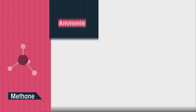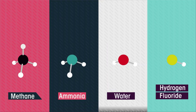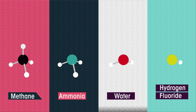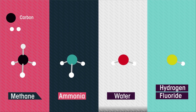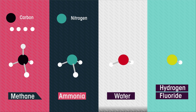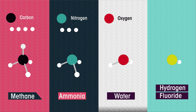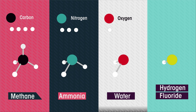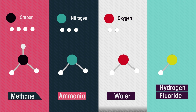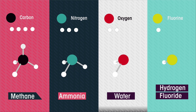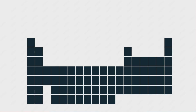The bonding in methane, ammonia, water, and hydrogen fluoride shows a pattern. Methane is carbon bonded to four hydrogen atoms. Ammonia is nitrogen bonded to three hydrogen atoms. Water is oxygen bonded to — guess how many — two hydrogen atoms. And hydrogen fluoride is fluorine bonded to just one hydrogen atom. Carbon, nitrogen, oxygen, and fluorine appear in the periodic table in this order, moving along the second row from left to right.